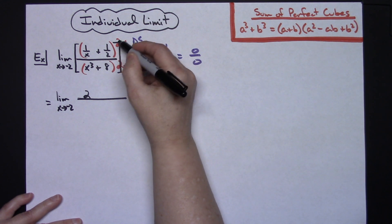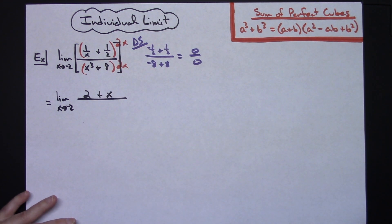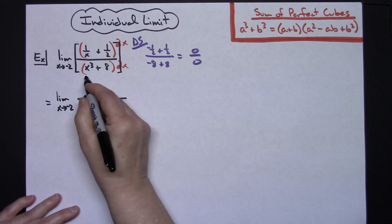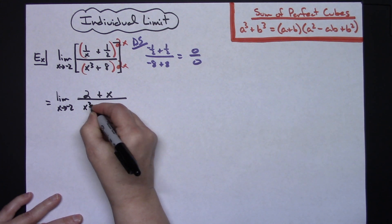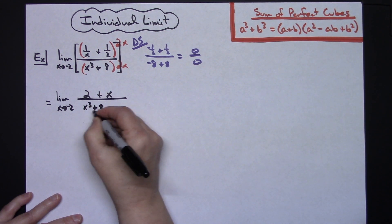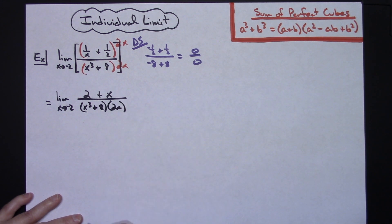A one-half times the 2x—distributing there, the 2s cross out—it's going to leave me with an x. So that numerator is going to go to a 2 plus x. Now on the bottom I'm going to choose not to distribute; I'm just going to leave that x to the third plus 8 times that 2x right there.